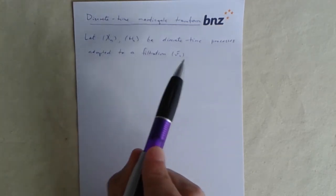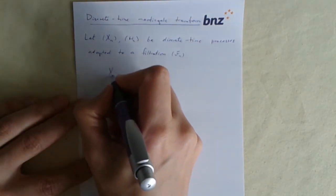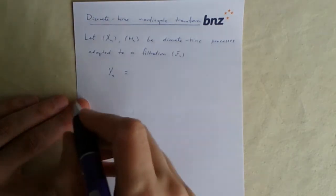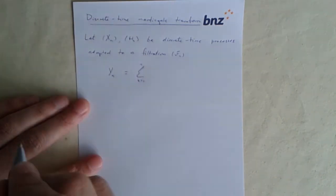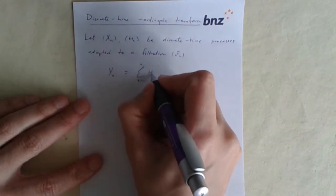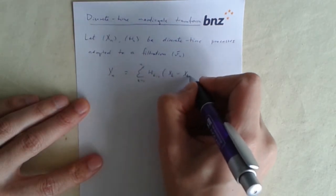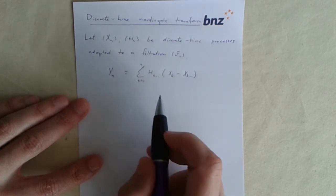They're both processes that are adapted to some filtration fn, and the new process y will be given like this: yn will be, instead of a stochastic integral, we'll have the corresponding sum. It's the sum up as far as n of the increments of x multiplied up by h.